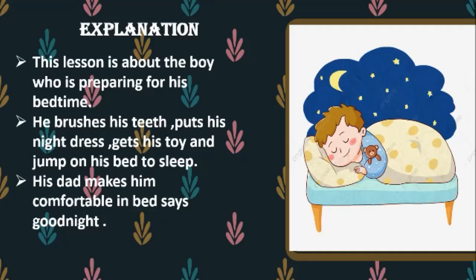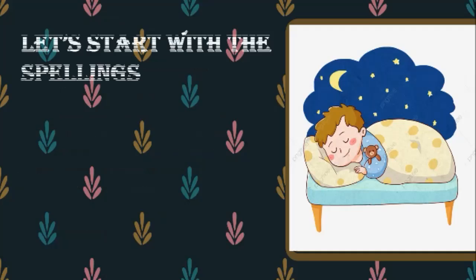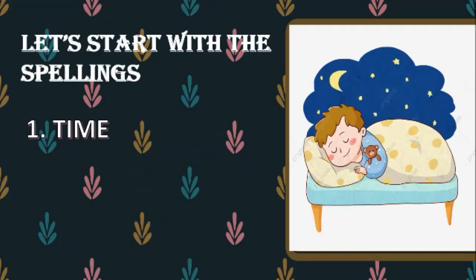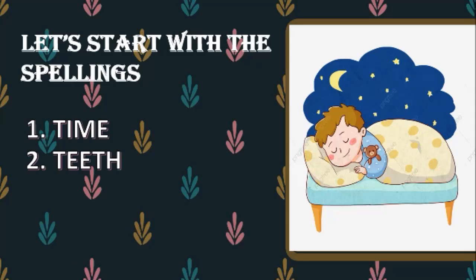Practice this lesson, children. Now let us start with the spellings. All of you read with me. Number one: T-I-M-E, time. Say again: T-I-M-E, time. Number two: T-E-E-T-H, teeth.